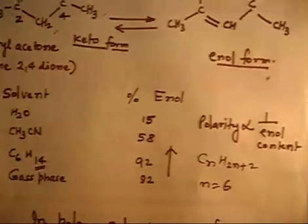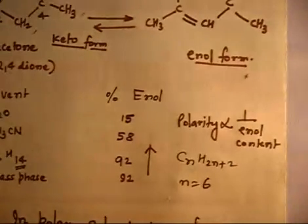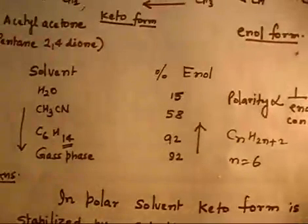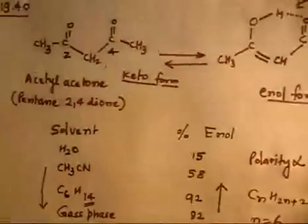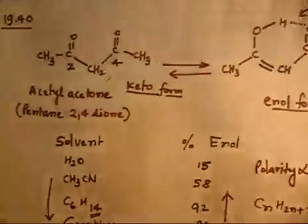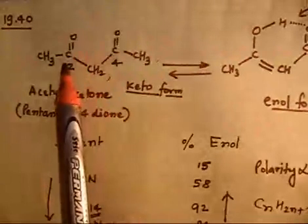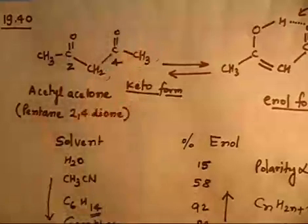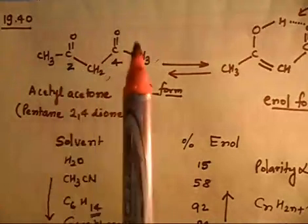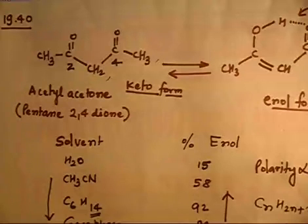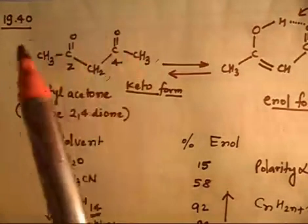Why is this so? If the solvent is polar, and the keto form is also polar — because oxygen carries a partial negative charge and carbon a partial positive charge — then a polar solvent will stabilize the keto form through solvation. But if the solvent is not polar, it will not stabilize the keto form.